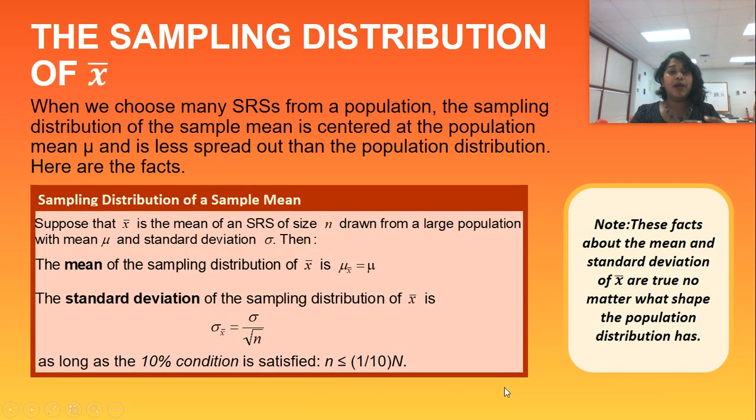So a wrap up of what are the sampling distributions of X bar? Here's our formal definition in our red. But if I talk to you about it just for a second, if we choose hundreds and hundreds or lots of simple random samples in a population, then our sampling distribution of the sample mean, so the sampling distribution of X bar, should be centered at the population mean or mu. It should also be less spread out than the population distribution.